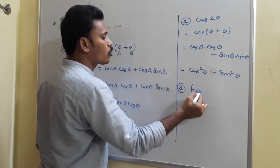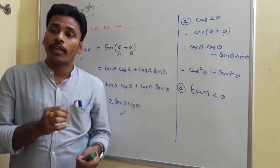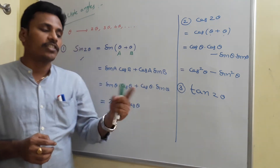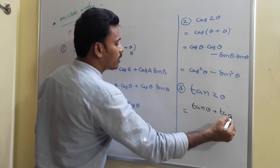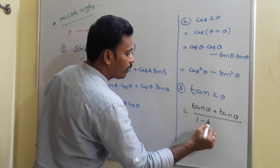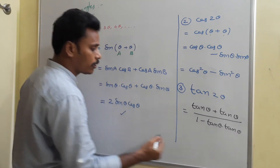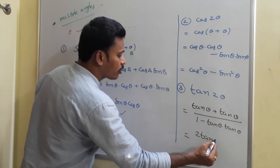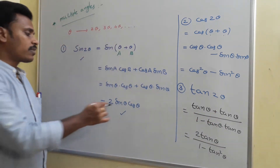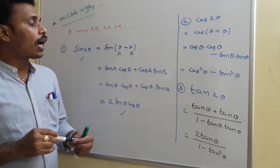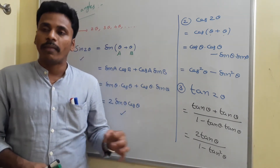In a similar fashion, we can write tan 2 theta. Tan of A plus B, where A is theta and B is theta: tan of A plus B equals tan A plus tan B divided by 1 minus tan A times tan B. Replacing A and B with theta gives tan theta plus tan theta divided by 1 minus tan theta times tan theta. On simplification, the numerator is 2 tan theta and the denominator is 1 minus tan squared theta. So tan 2 theta equals 2 tan theta divided by 1 minus tan squared theta.